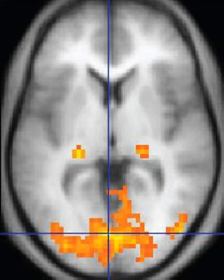Magnetic resonance imaging is a medical application of nuclear magnetic resonance (NMR). NMR can also be used for imaging in other NMR applications such as NMR spectroscopy. While the hazards of X-rays are now well controlled in most medical contexts, an MRI scan may still be seen as a better choice than a CT scan. MRI is widely used in hospitals and clinics for medical diagnosis, staging of disease and follow-up without exposing the body to radiation.